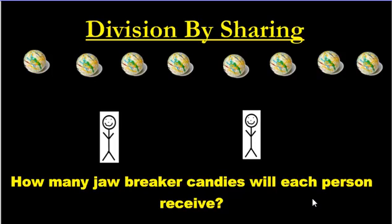Do you remember a time where you had to share something? Did you know at that moment you were doing math? Yeah, you were doing math — you were doing division, and you were dividing using a strategy called dividing by sharing. Now there's only one rule for dividing by sharing: everybody has to get the same amount, because sharing is caring, and it's not fair otherwise.